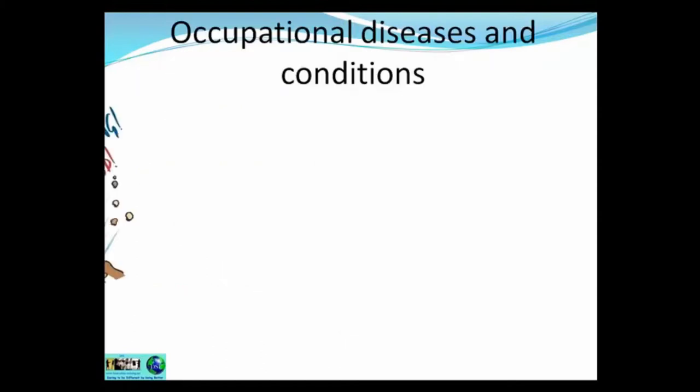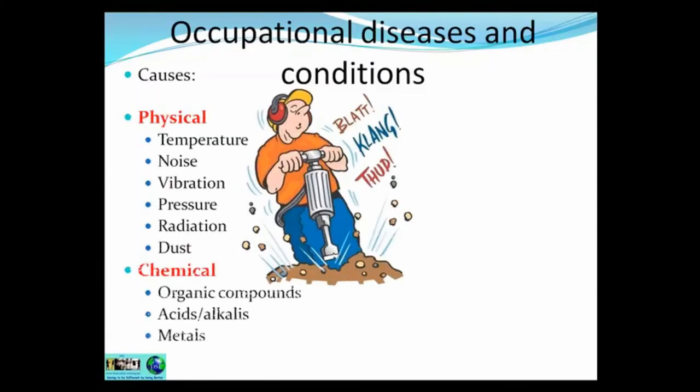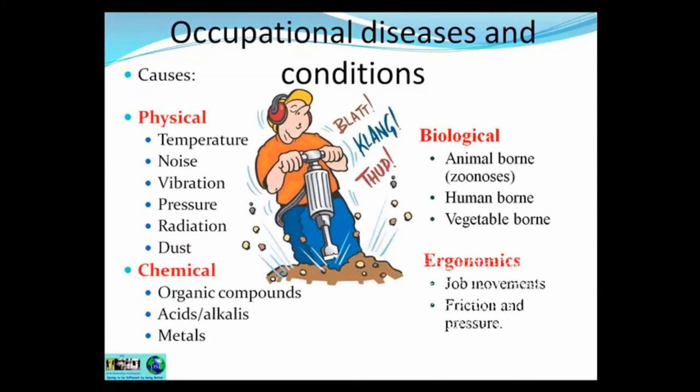First one — Health Hazards. Let's look at the four different types of health hazards. They are Physical, Chemical, Biological and Ergonomics. Physical covers a lot of environmental factors such as temperature, noise, vibration, pressure,